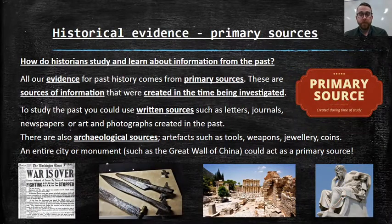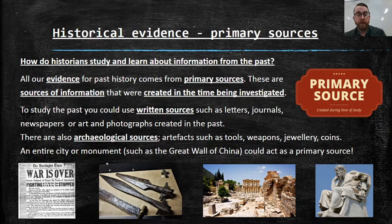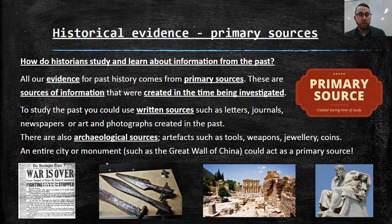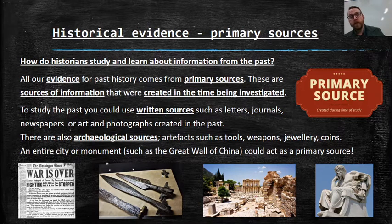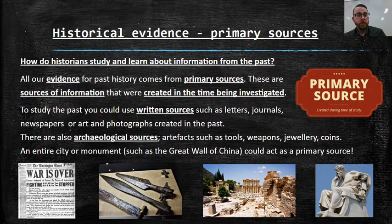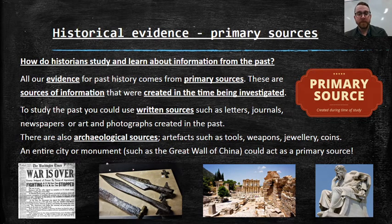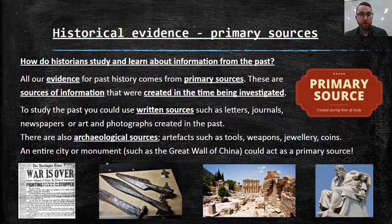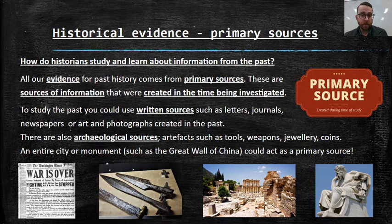What are primary sources? How do historians study and learn about information from the past? If I asked you how many chairs are in a McDonald's on Springvale Road in Glen Waverley, you could just go there and find out. But if I asked you what the streets were like in ancient Rome, you couldn't do that — it's not the present. All our evidence for past history comes from something called primary sources.